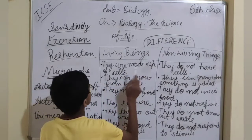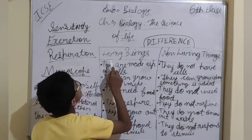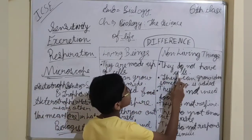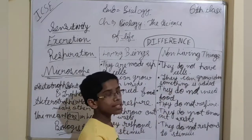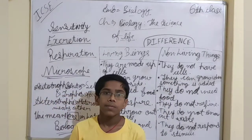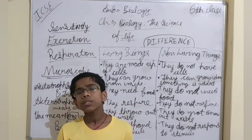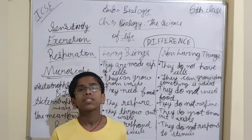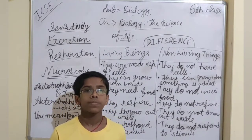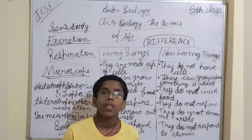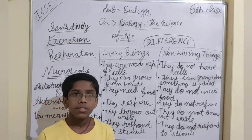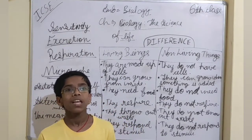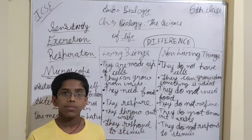Living beings are made up of cells and non-living things do not have cells. What are cells? Cells are the smallest unit that has life and can exist on its own. There are two types of organisms: multicellular organisms and unicellular organisms.